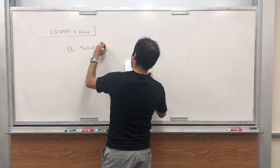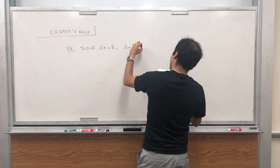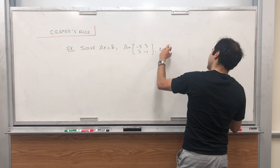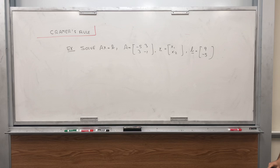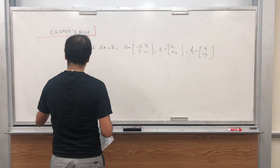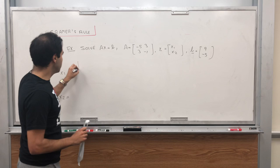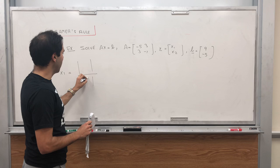Suppose we want to solve Ax = b, where A is the matrix [-5, 3; 3, -1], x is [x1, x2], and b is [9, -5]. What is nice about Cramer's rule is that it gives you directly x1 and x2. To solve for x1, it's just a ratio of two things.